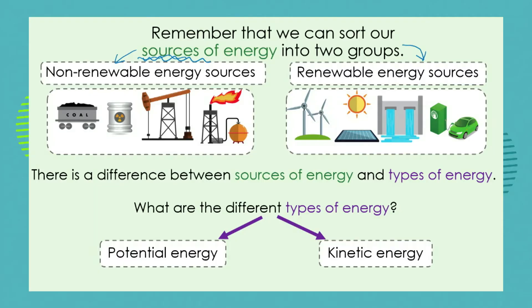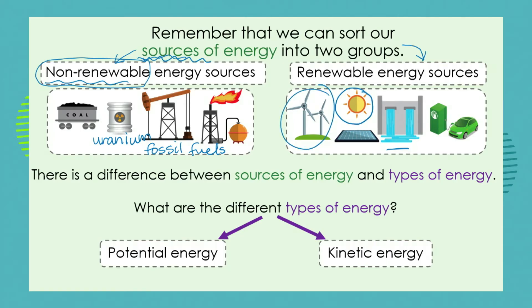We classified all of our fossil fuels into the group non-renewable energy sources. We also classified something like uranium, which is a source of nuclear power. All of these are limited resources. Then we've got our renewable energy sources, which sometimes we can recycle like water or hydropower, and in cases like the sun and wind, these sources are being produced by the universe all the time, so they are renewable.